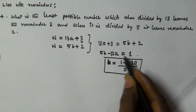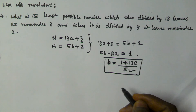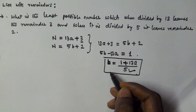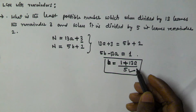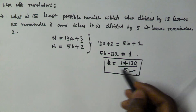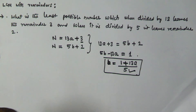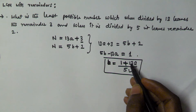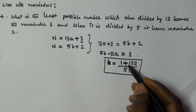We need to find the value of a (an integer) such that the numerator (1 + 13a) is divisible by 5, so that b is also an integer. For example, if a = 1, then 13 + 1 = 14, which is not divisible by 5. If a = 2, then 26 + 1 = 27, also not divisible by 5.